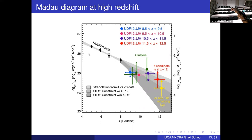With this kind of study we can construct the Madau-Lilly diagram at high redshift. It has become clear from observations that the star formation rate density of the universe steadily declines beyond redshift ~4 to fairly low values — a decline of about 1.5 to 2 orders of magnitude. It rises by two orders of magnitude from redshift 0 to 2, stays relatively flat, then falls by two orders of magnitude by redshift 10 or 12.